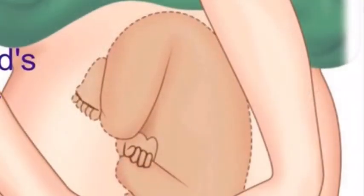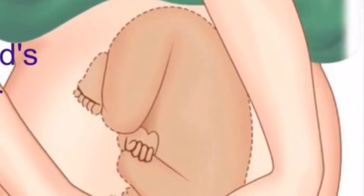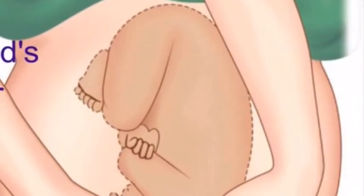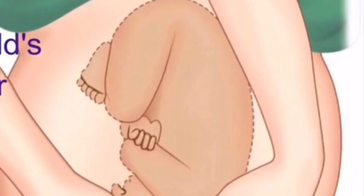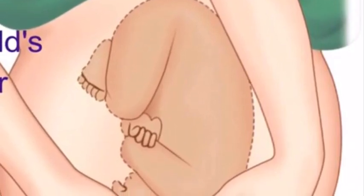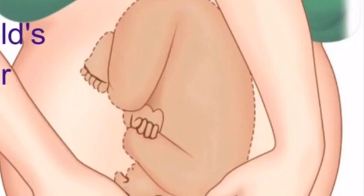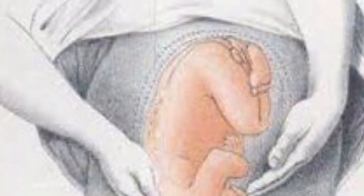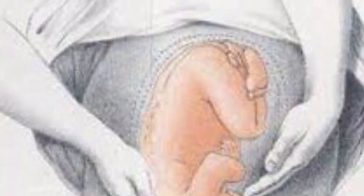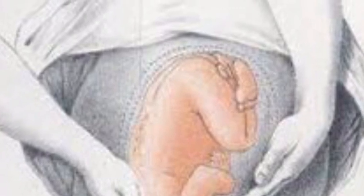The fourth maneuver is the pelvic grip. Face the client's feet. Place hands on the abdomen and point fingers toward the mother's feet. Gently move the fingers on both hands toward the pubis by sliding the hands over the sides of the patient's uterus. The side where the greatest resistance to the descending fingers is felt is the location of the brow.